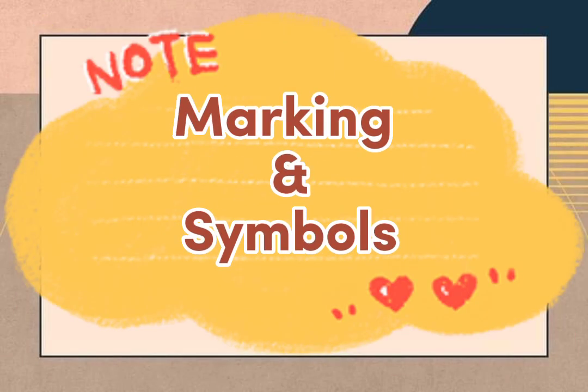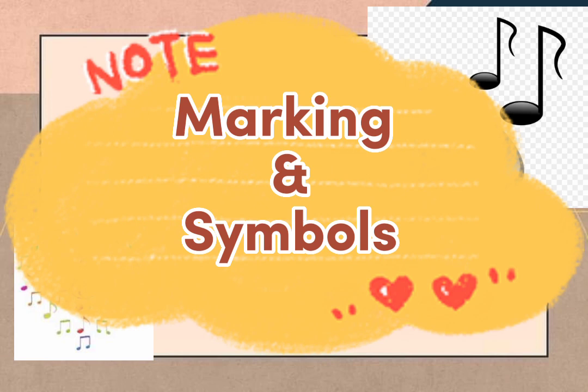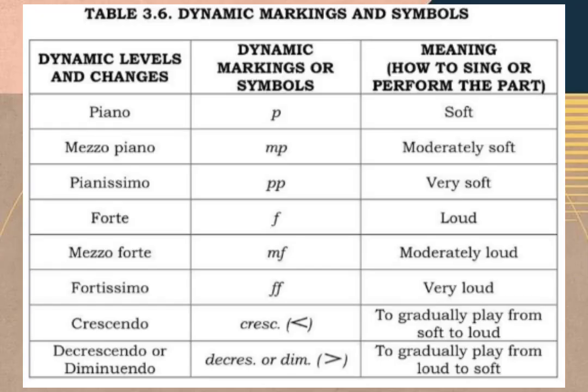There are dynamic markings or symbols that you will see in any musical score. Take a look at the table. It shows the dynamic markings and symbols — the dynamic levels and changes, and their meaning on how to sing or perform the part.